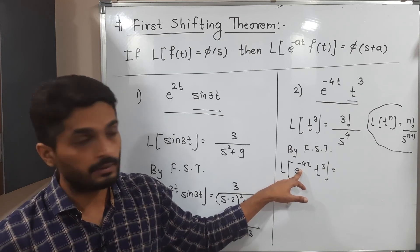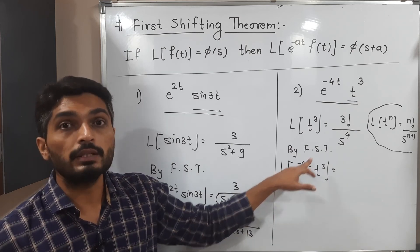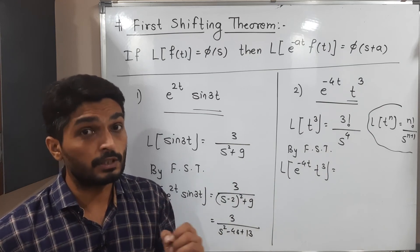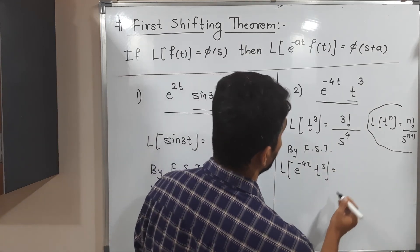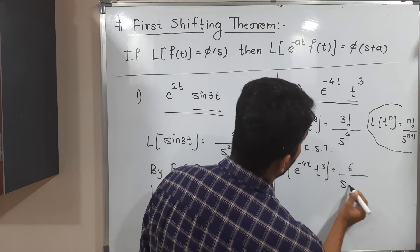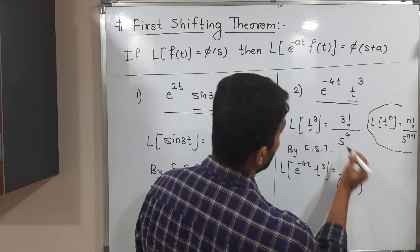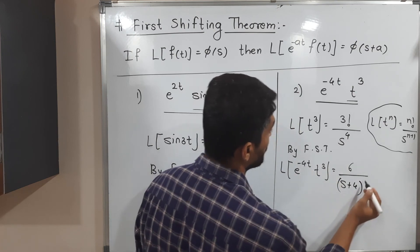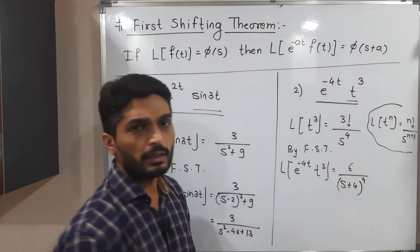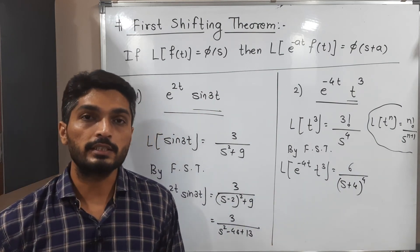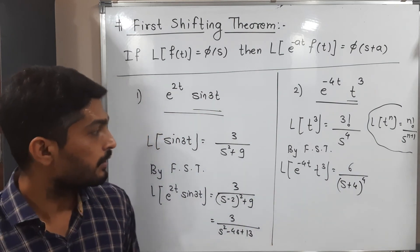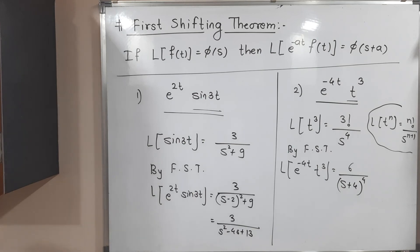When you have a minus sign you add that number, and when you have a plus sign you subtract that number — this is the simple logic. Since minus 4 is there, we replace s by s + 4. So the result is 6/(s + 4)⁴. You can expand the bracket if you want, or consider this as the final answer. In this way we find the Laplace. In the next videos we will discuss a few more interesting problems.